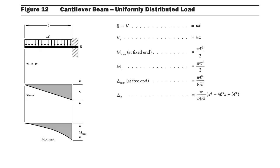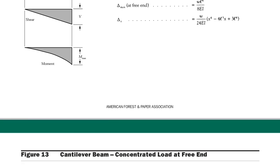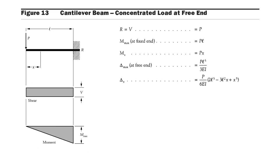Now we move to the next condition: a cantilever beam carries a concentrated load at its free end. In this case, the maximum bending moment is pl — simply multiply the concentrated load and length. The maximum deflection value is pl³ / 3EI.